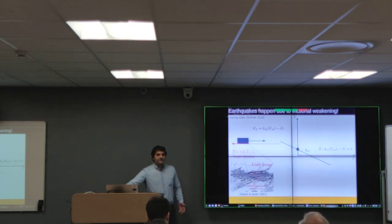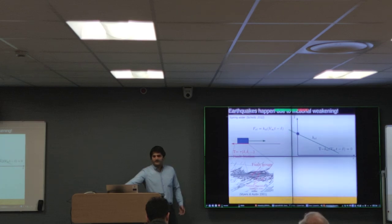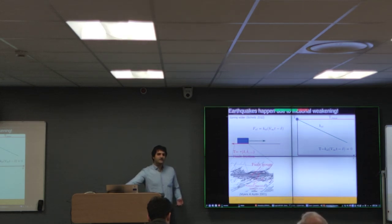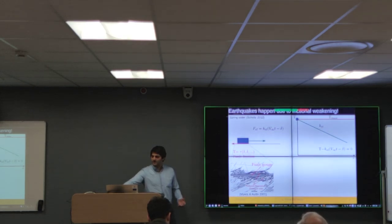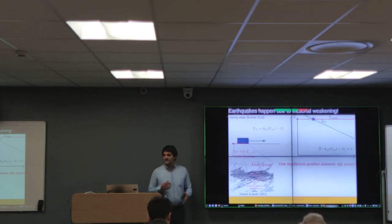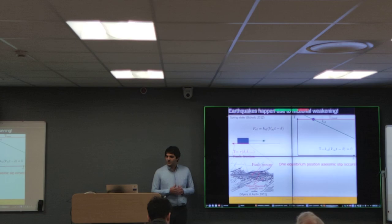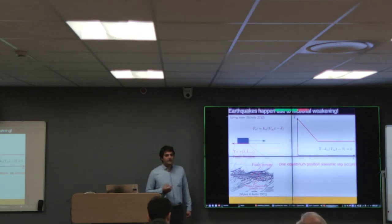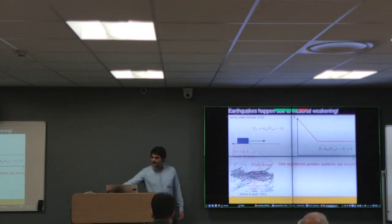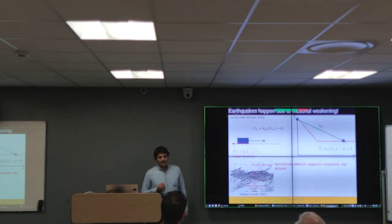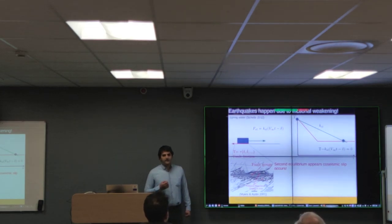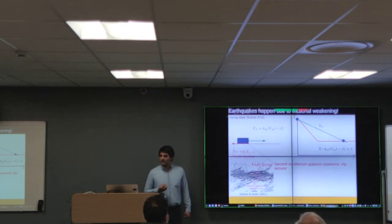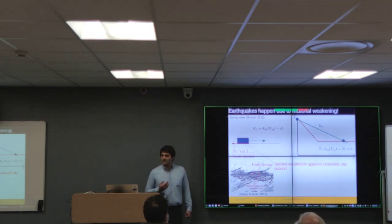If we perform the free-body diagram of the spring-slider, we see two forces: the elastic force from the spring and the frictional force from the fault plane. Initially, the elastic force is small and the block does not move — it is in equilibrium. At some point friction reaches its maximum value. If we account for frictional weakening, two equilibria are found; the initial one becomes unstable and the block moves toward the second equilibrium, causing co-seismic slip.